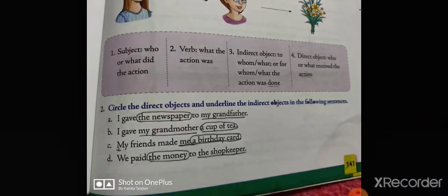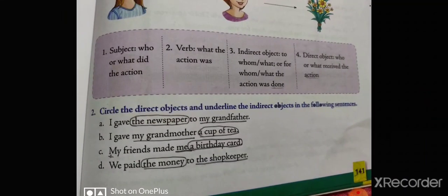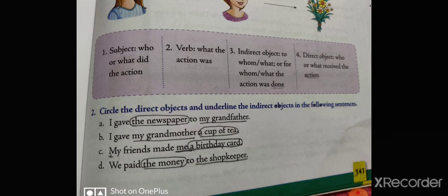Circle the direct object and underline the indirect objects in the following sentences. 'I gave the newspaper to my grandfather' — direct object is 'the newspaper,' indirect object is 'my grandfather.' 'I gave my grandfather a cup of tea' — direct object is 'a cup of tea,' indirect object is 'my grandfather.' 'My friends made me a birthday card' — direct object is 'a birthday card,' indirect object is 'me.' 'We paid the money to the shopkeeper' — direct object is 'the money,' indirect object is 'the shopkeeper.'